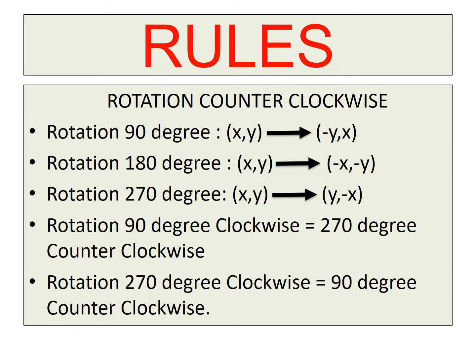Before doing the exercises, I want to review the rules for rotations. For a 90° rotation, you flip the coordinates of the point — X becomes Y and Y becomes X — and then you change the sign of the new X coordinate. For a 180° rotation, you don't flip; you only change the sign of both X and Y.